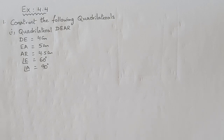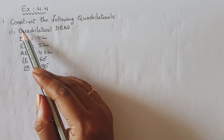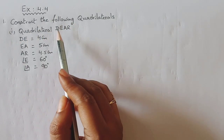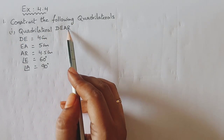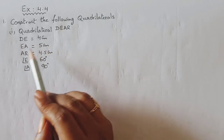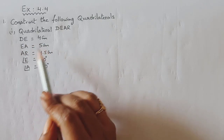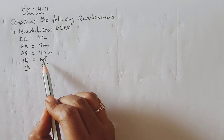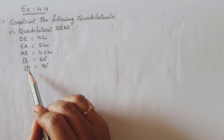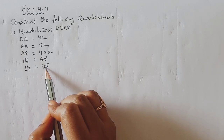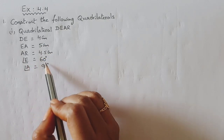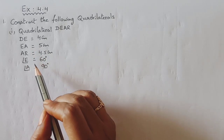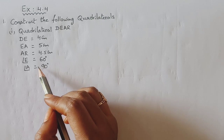Question 1: Construct quadrilateral DEAR where DE is equal to 4 centimeters, EA is equal to 5 centimeters, AR is equal to 4.5 centimeters, angle E is equal to 60 degrees, and angle A is equal to 90 degrees. Three sides and two included angles are given. Let us draw the rough figure first.